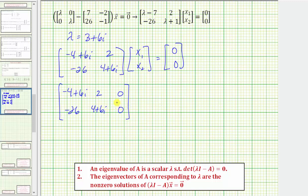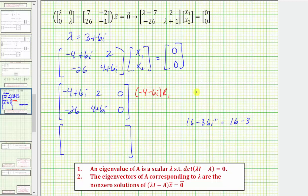Now we'll write this in reduced row echelon form. For our first step, let's get a real number in this position by multiplying the first row by the conjugate of negative four plus six i. So we'll replace row one with negative four minus six i times R₁. Negative four plus six i times negative four minus six i equals 16 minus 36·i², which is 16 minus 36 times negative one, equaling 52. So the first entry is 52, and two times negative four minus six i is negative eight minus 12i, with zero in the augmented column. The second row stays the same.